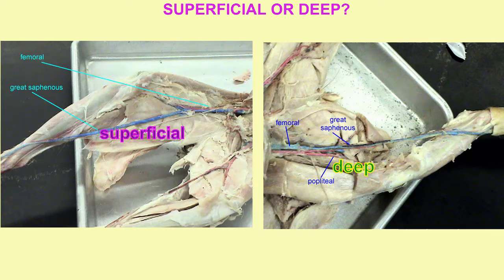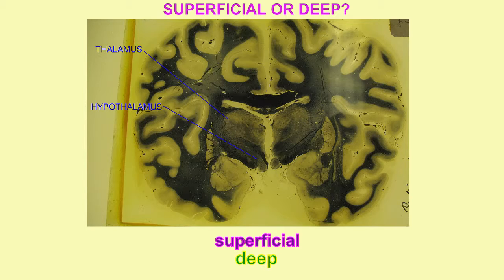Obviously, superficial and deep can be relative, because the great saphenous vein is deep to the skin, but superficial to the popliteal vein.